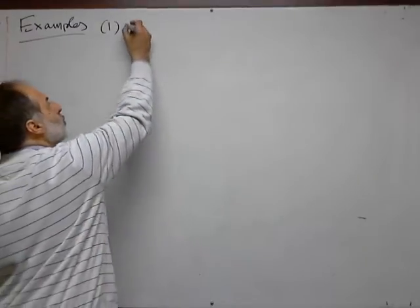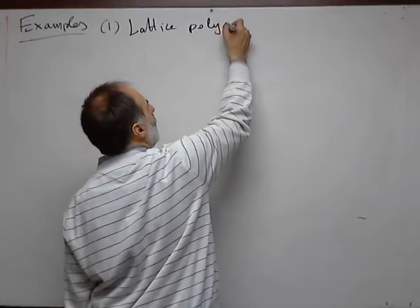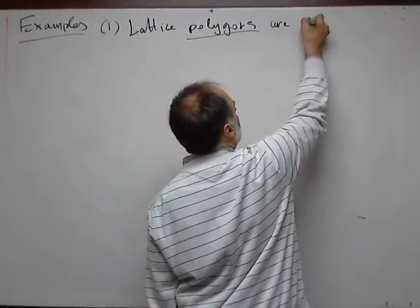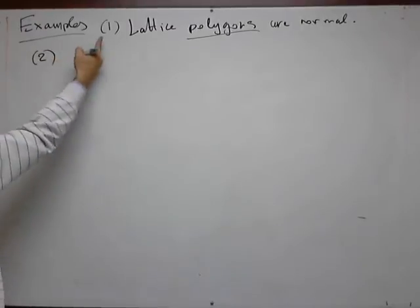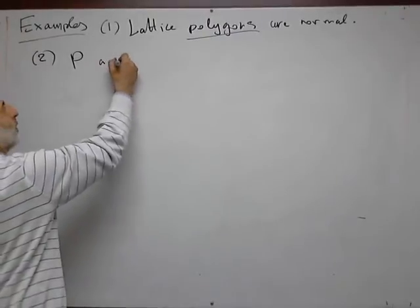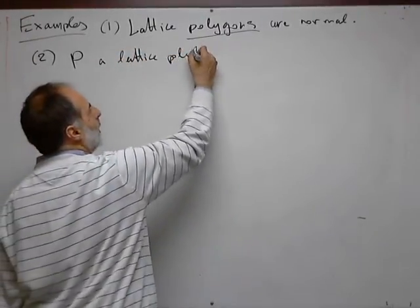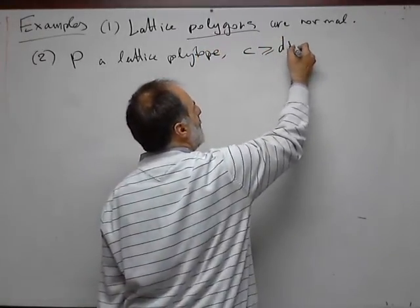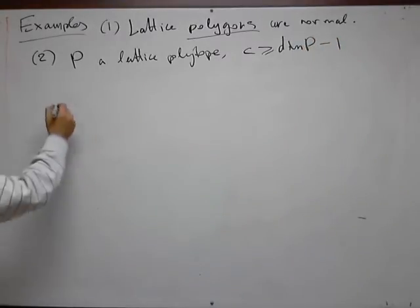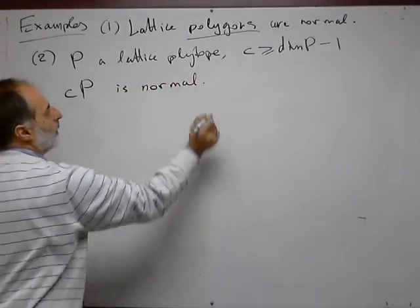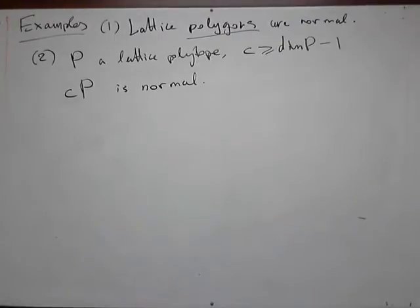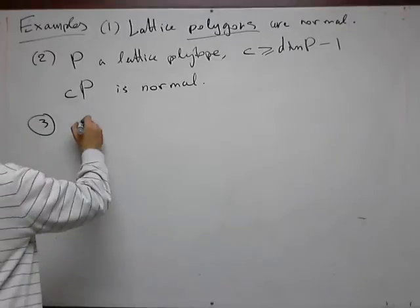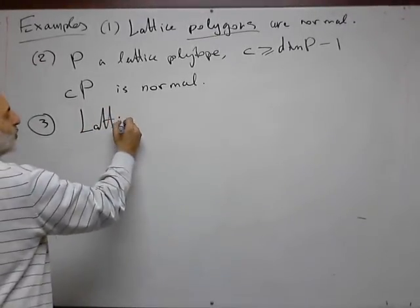All lattice polygons are normal. Here, polygons means two-dimensional polytopes. Of course, in dimensions one and zero, normality is also automatic. This can be extended to the following class: let P be any lattice polytope, and c be a natural number at least the dimension of P minus one. Then c times P is normal. And two implies one, because when the dimension is two, there is no condition on c.